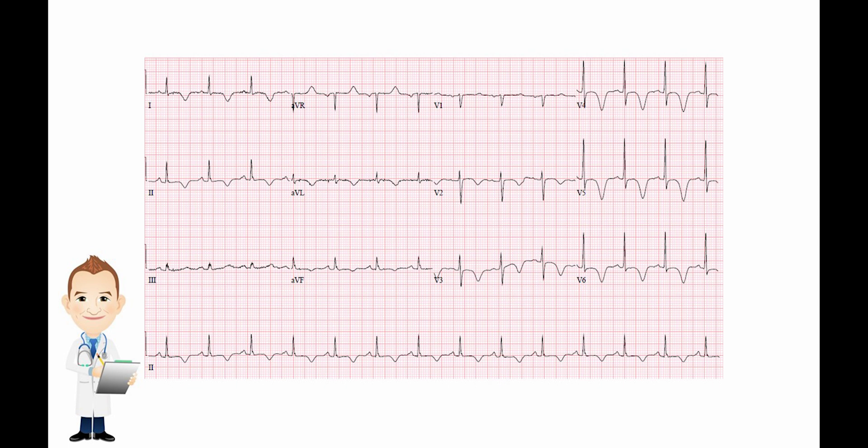You have these deep inverted T-waves. These are what we call CNS T-waves. They usually indicate some kind of brain injury or brain dysfunction, so I would definitely look out for that. Maybe the patient had a stroke, a hemorrhagic stroke, or something else. This is definitely indicative of some kind of CNS disturbance. It can mean ischemia as well, so don't just blow it off and think that it's not ischemia — it certainly can be.